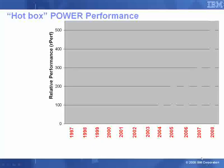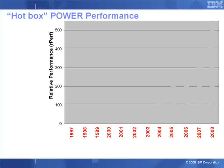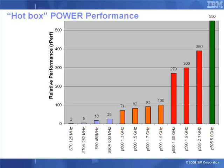First I'd like to show you this graph that's taken 12 years to actually create. I've taken the fastest machine available in the Power range of computers for the past 12 years — you can see the dates along the bottom here. And I've plotted against that the relative performance number, the RPERF number, to give us an impression of how much faster these machines actually are. We start off with the S70, which is an RPERF of 2. Now that looks pitifully small on this graph, but it was actually a very fast computer in its day.